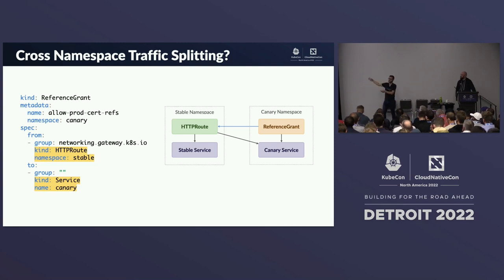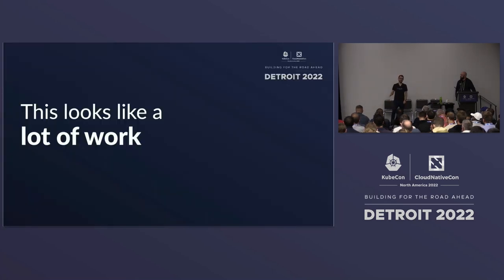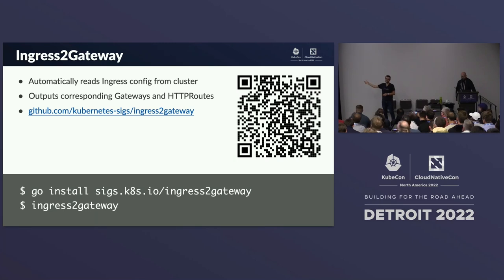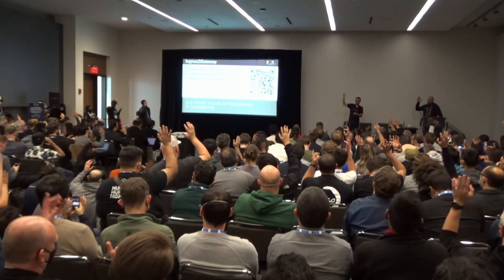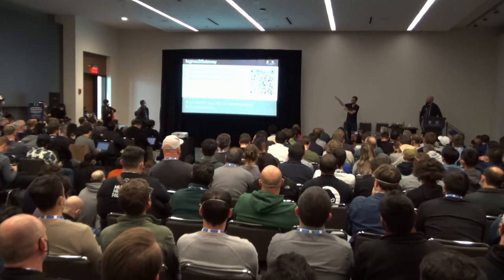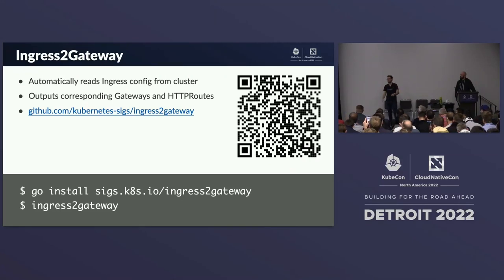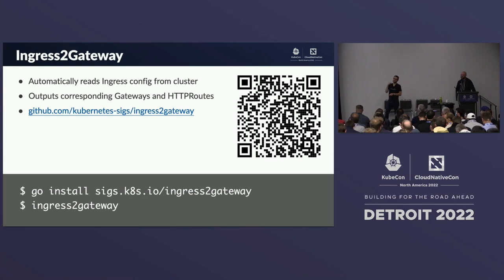We've created a tool called ingress2gateway to make migration easier. How many of you have Kubernetes clusters with a bunch of Ingresses? The tool looks at your cluster from your kubeconfig, gets all the Ingresses in it, and tries to print out equivalent Gateway and HTTPRoute resources. It's still early in development — it works on my cluster but please let us know if it doesn't work for you. You may not need to move from Ingress to Gateway API, but if you're interested we'd love your feedback.